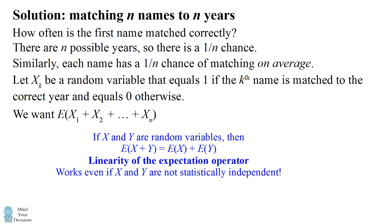So for example, let's say you're matching two items to two years. If you match the first item incorrectly, the second item is necessarily going to be matched incorrectly because its answer choice has been taken if you're doing a permutation. So the key is that this linearity of the expectation operator works even if the variables are not statistically independent.